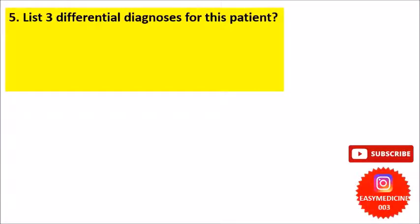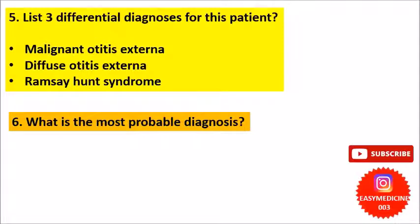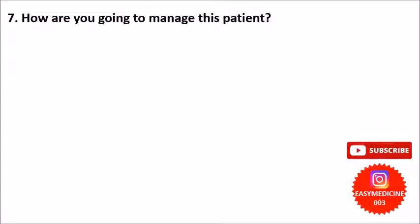The fifth question was to list at least three differential diagnoses. Based on the history and presentation, the three differential diagnoses could be malignant otitis externa, diffuse otitis externa, and Ramsay Hunt syndrome. We need to construct points for and against to narrow down the provisional diagnosis. For this patient, the most probable diagnosis is malignant otitis externa.